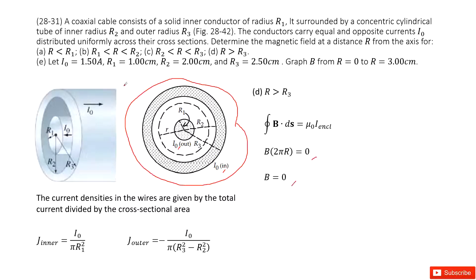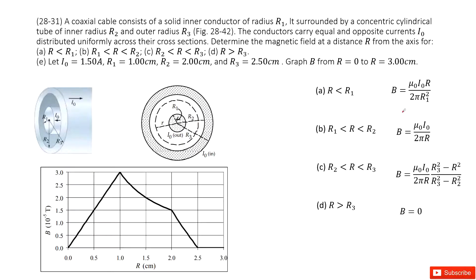Part e gives us the numbers for I0, r1, r2, r3, and then we need to plot the graph for B with r. You just write down the function for B in different cases from parts a, b, c, d. Write it there and input the given quantities.